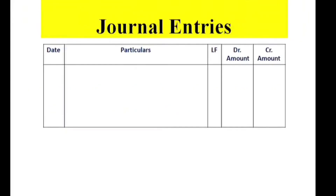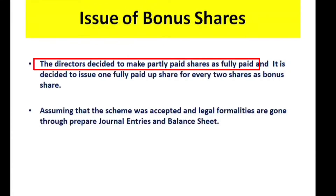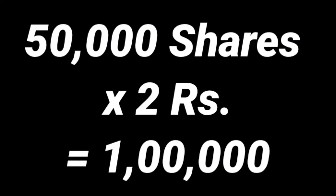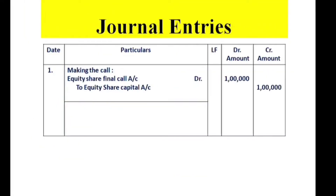For the journal entries — first, the directors make partly paid shares into fully paid shares. We have 50,000 shares of ₹10 each, ₹8 paid. The actual rate is ₹10, so total is ₹5 lakhs. For the uncalled amount: 50,000 × ₹2 = ₹1 lakh. Journal entry: Equity Share Final Call Account Dr. to Equity Share Capital Account — ₹1 lakh.